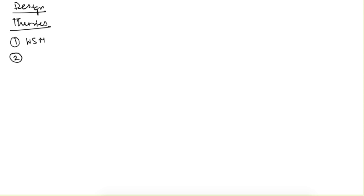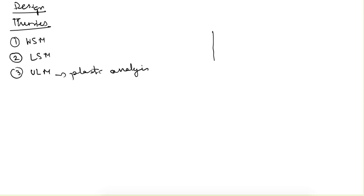Having completed our plastic analysis part, we will now see the design part of steel structures. For design purposes there are some theories available: the first one is working stress method, then there is limit state method, and the last one is ultimate load method. The plastic analysis we studied is a part of this ultimate load method, where we try to figure out what can be the ultimate load on the material and use that for design.